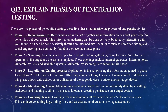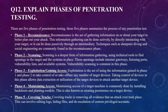Question twelve: explain the phases of penetration testing. There are five phases. Phase one is reconnaissance — the act of gathering information about your target to better plan your attack, done actively by directly interacting with the target or passively through an intermediary. Techniques such as dumpster diving and social engineering are common. Phase two is scanning — using technical tools to find openings in a target system, including internet gateways, listening ports, vulnerability lists, and available systems. Phase three is exploitation or gaining access — using information from phases one and two to take control of or take offline target devices.